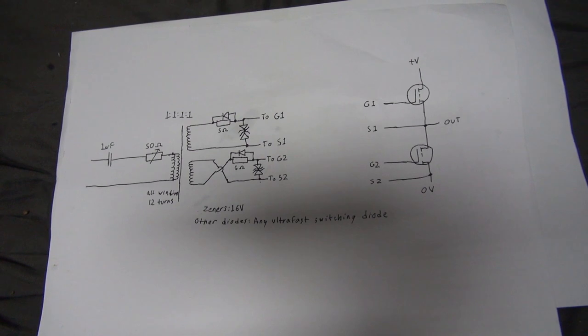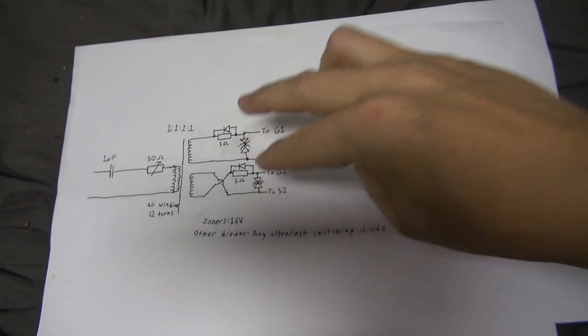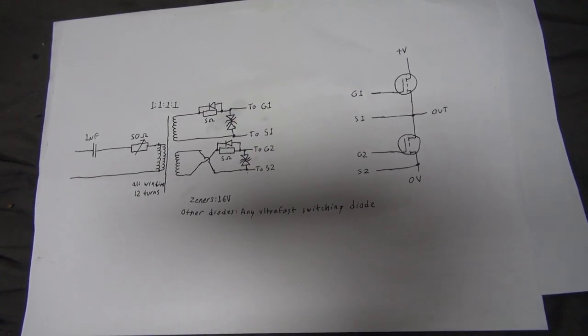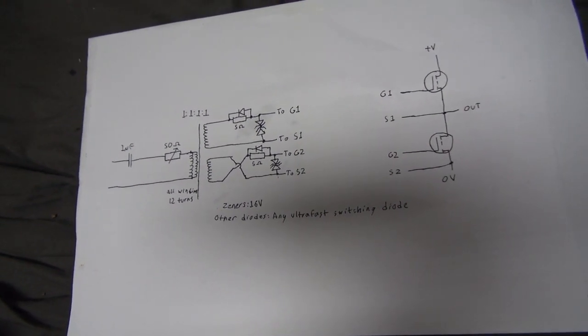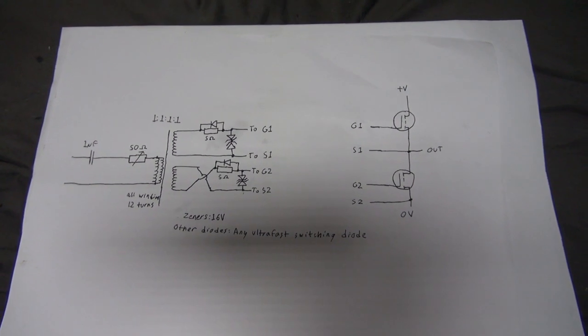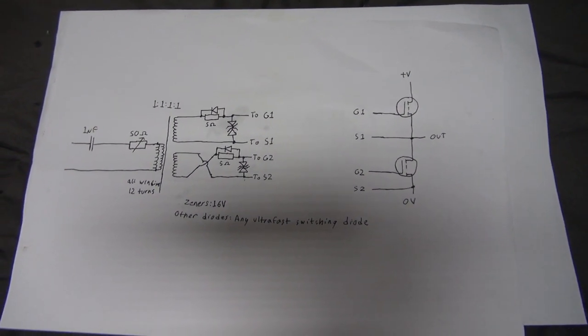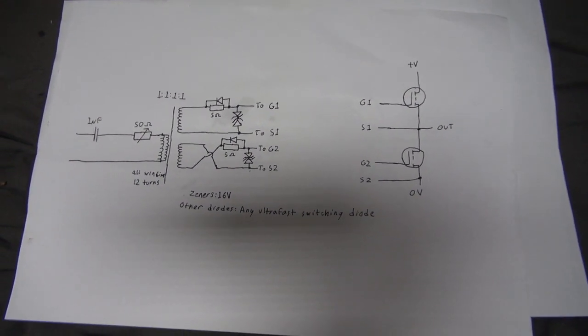And finally there's these back-to-back Zener diodes connected to the gate and source pins of each MOSFET just to clamp down the gate voltage so it doesn't go high enough to do any damage. And this is basically the configuration you're going to see in just about every Tesla coil ever. Well...